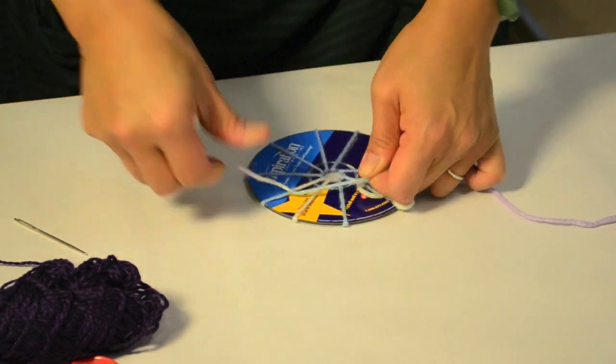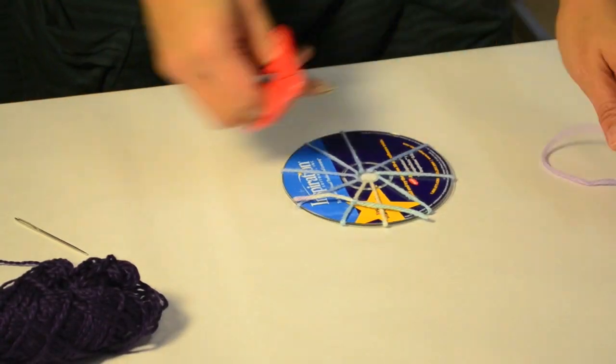The last step for making a loom is to take a pair of scissors and trim off the extra string so it is out of the way.